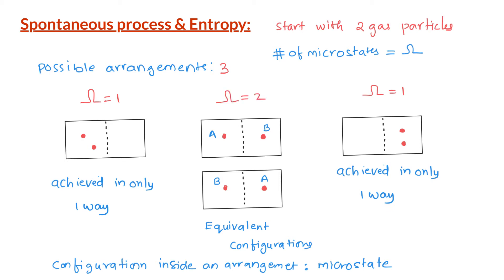Looking at the probability, it is more likely that we have one particle on each side of the container because there are more ways to achieve that arrangement. Arrangement 2 can be achieved in two different ways, whereas arrangements 1 and 3 can only be achieved in one way. As we increase the number of gas particles, the number of ways certain arrangements can be achieved increases dramatically.